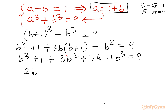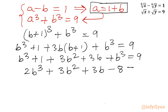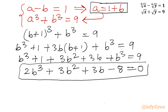Simplifying, I can write the cubic equation as 2b³ plus 3b² plus 3b plus (1 minus 9), so 2b³ plus 3b² plus 3b minus 8 equals 0. If you simply add all the coefficients of this equation: 2 plus 3 plus 3 minus 8, this becomes 0.